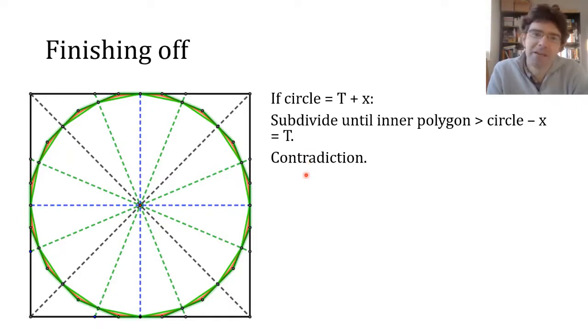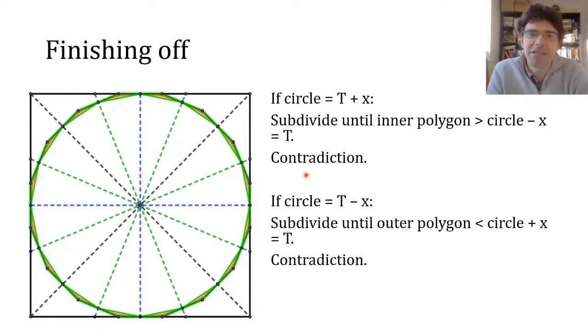And we can do exactly the same thing on the outside. If the circle's area were less than T, we can bisect the quadrants each time repeatedly until you get a circumscribed polygon where the leftovers, the bits around the outside, outside the circle, are less than x.